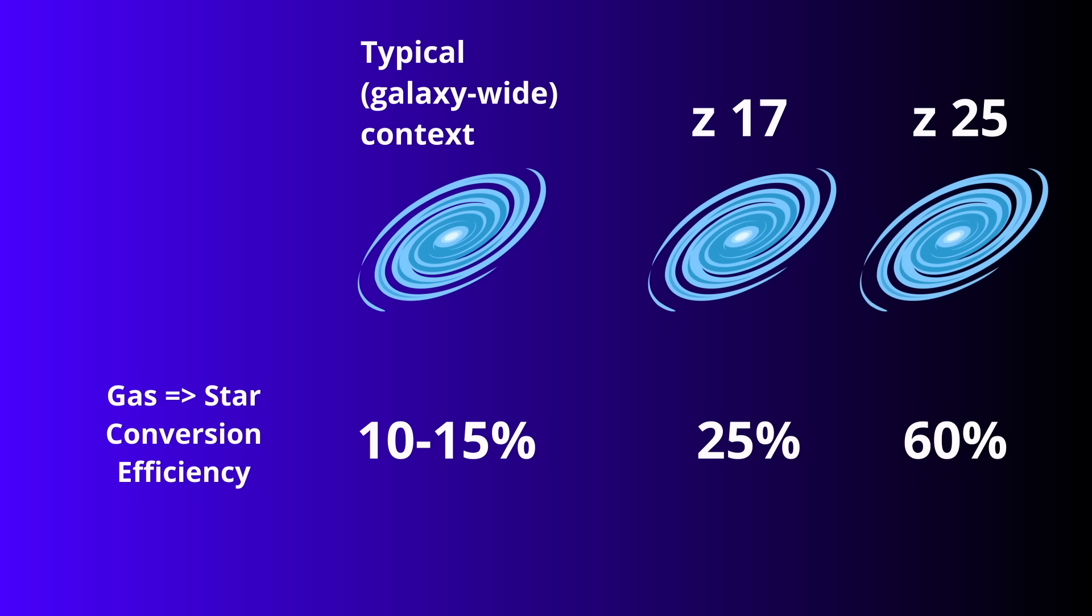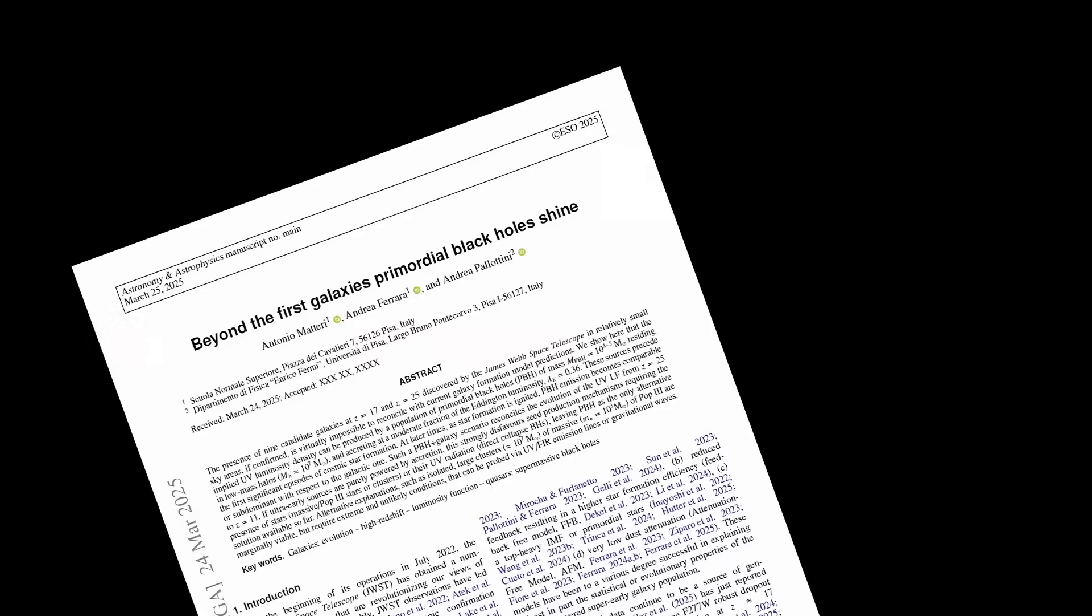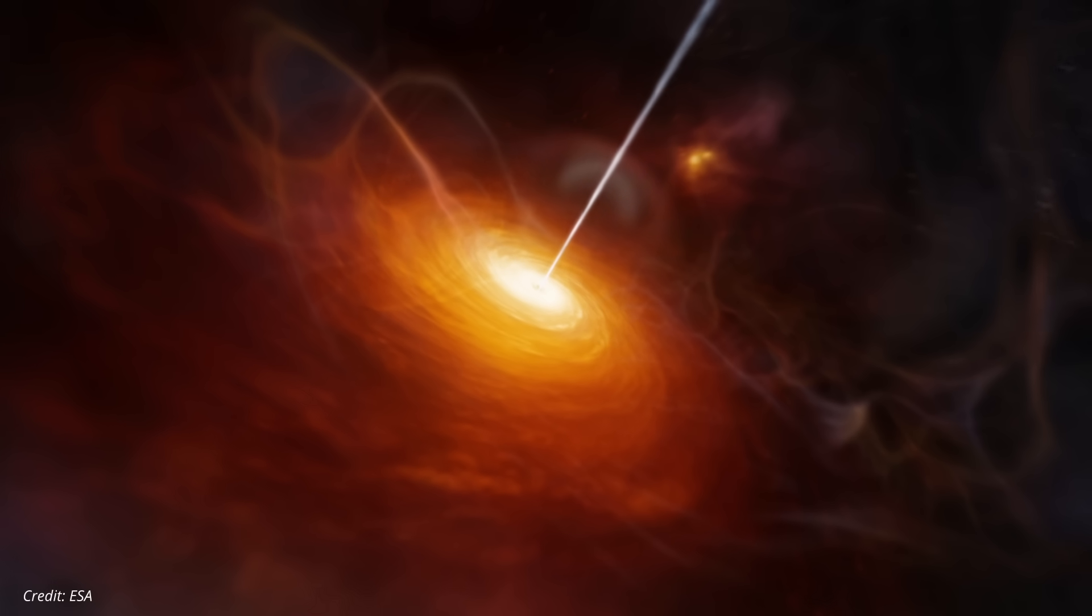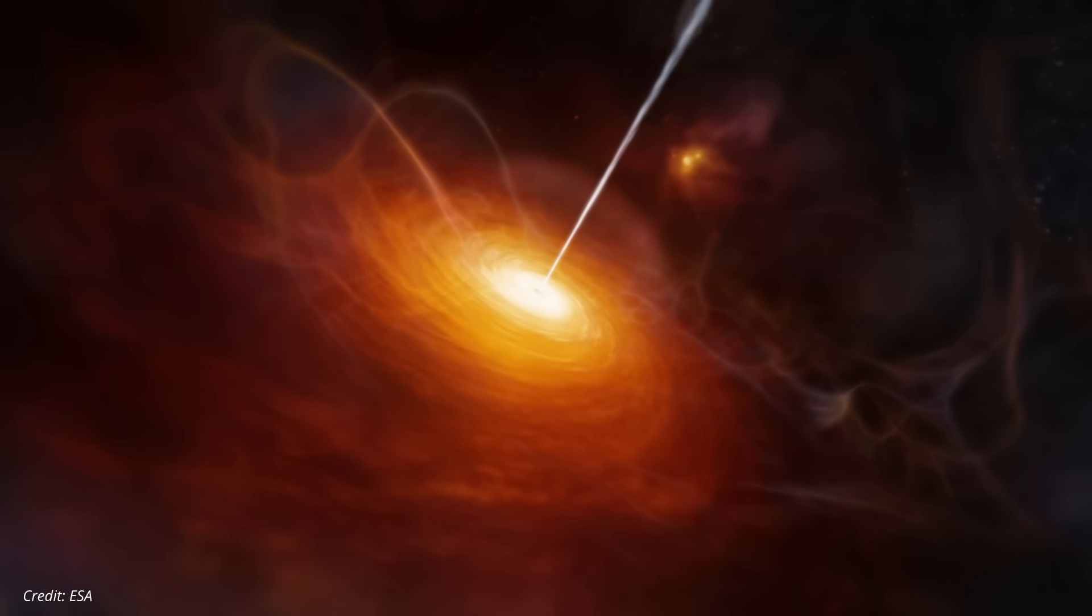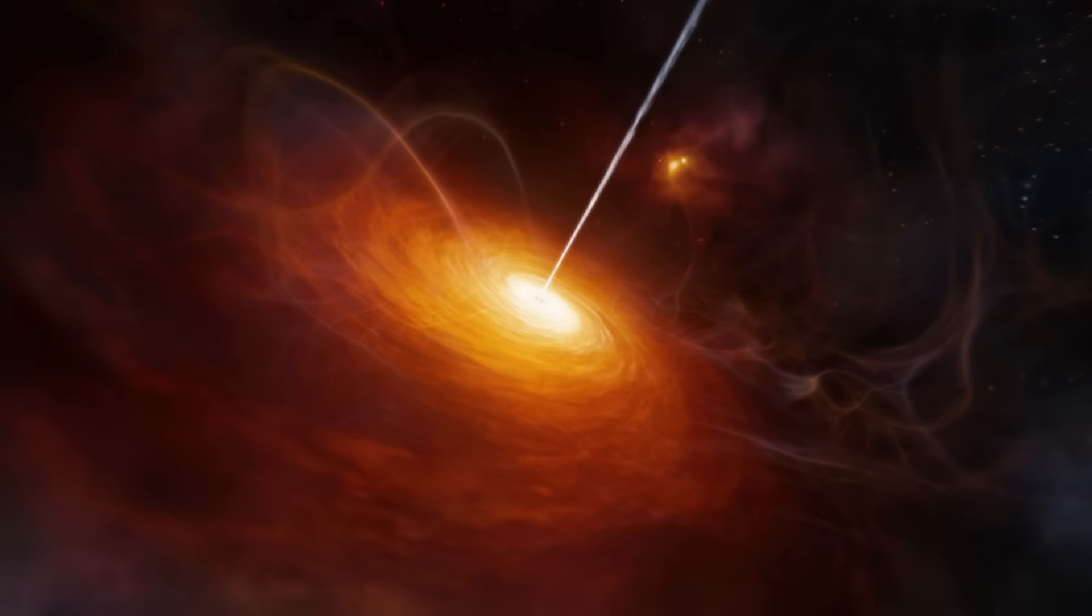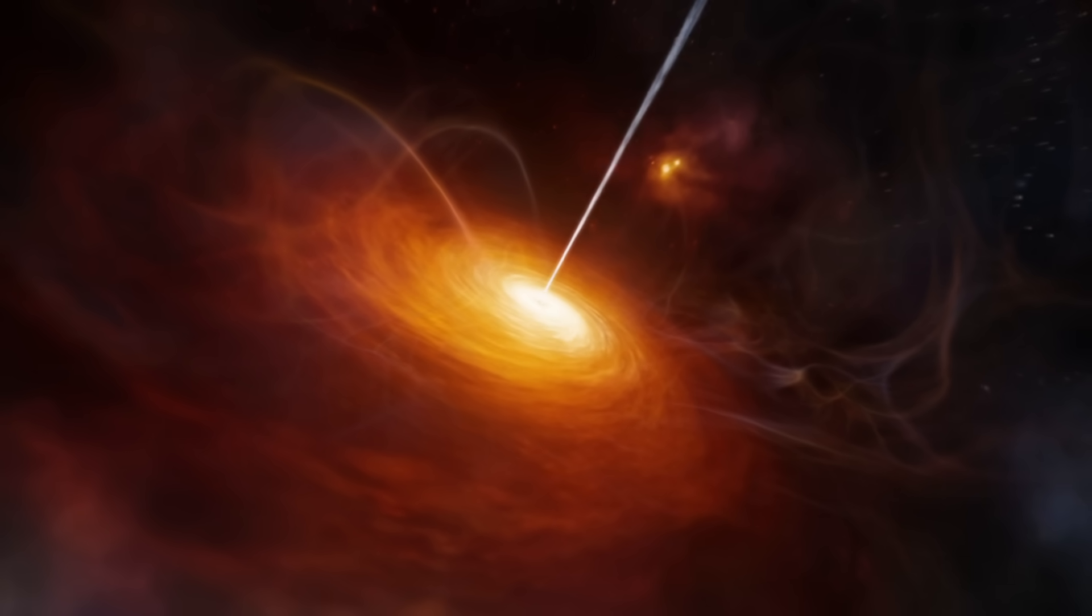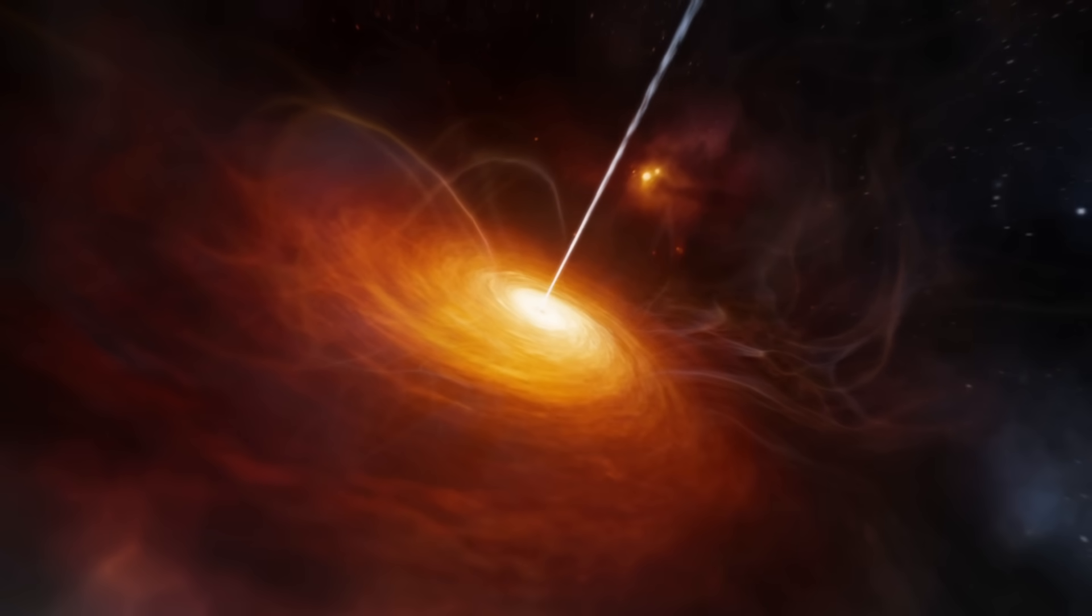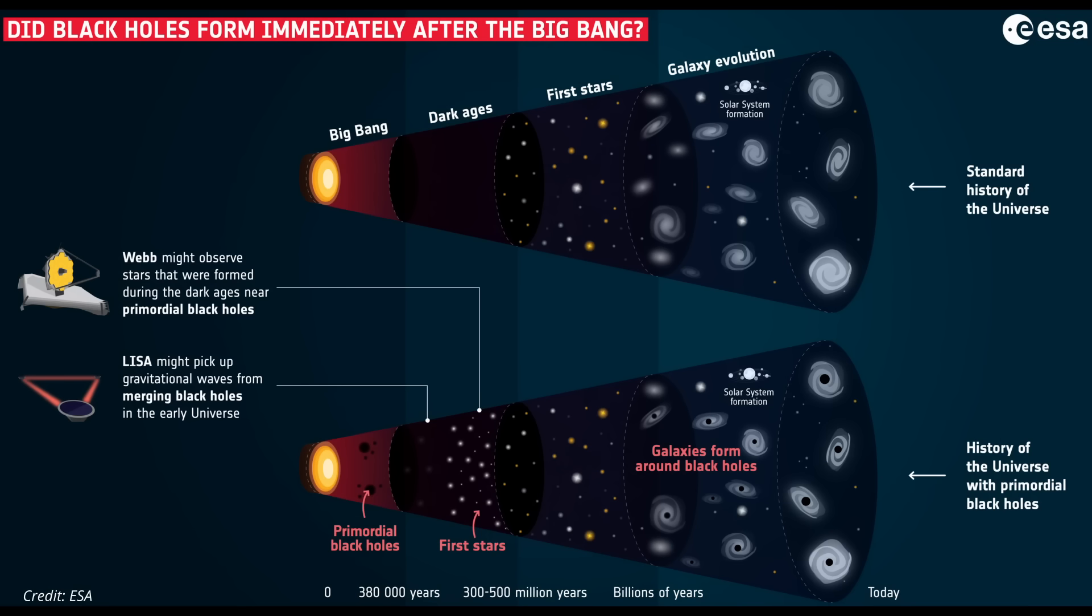The second team's solution is even stranger. They argue that the light we're seeing isn't from stars at all, but from primordial black holes: relics of the Big Bang itself, accreting gas and blazing like quasars. In their model, more than 90% of the ultraviolet light at these redshifts would be from primordial black holes. But this creates a whole new set of problems.